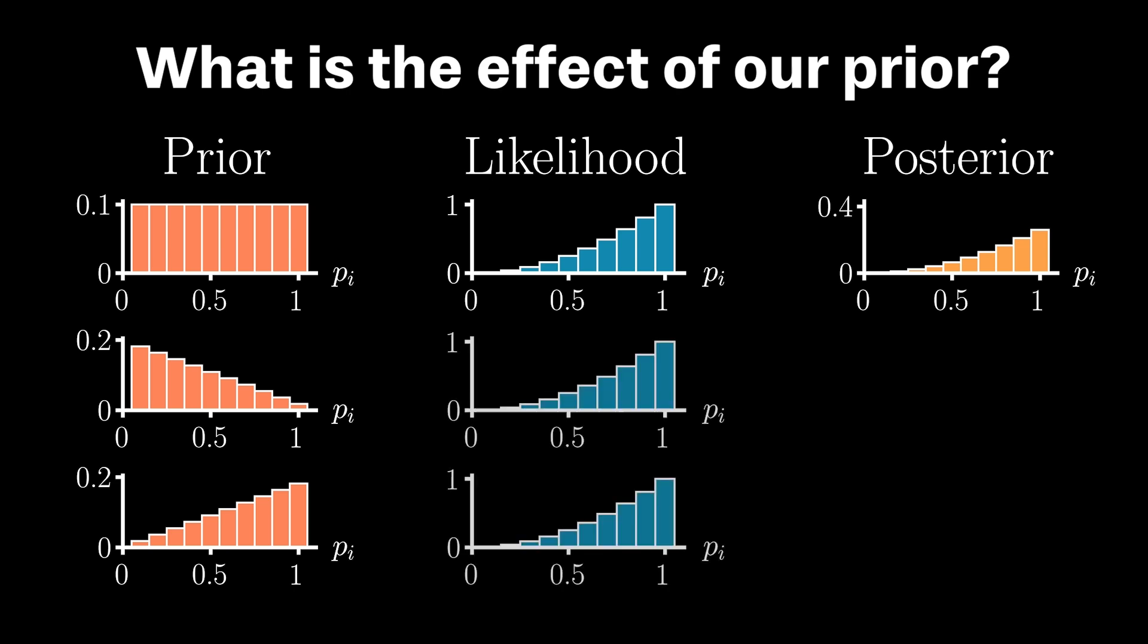We can now show our likelihood functions, which are exactly the same as before, as our likelihood functions do not depend on our prior distributions. They simply reflect the chance of observing our data for different parameter values.